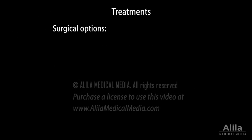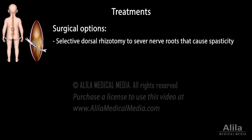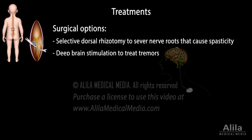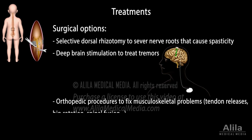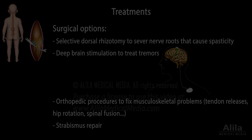Surgical management options include selective dorsal rhizotomy to sever nerve roots that cause spasticity, deep brain stimulation to treat tremors, various orthopedic procedures to fix musculoskeletal problems, and strabismus repair.